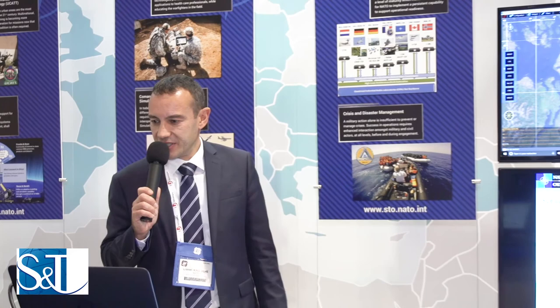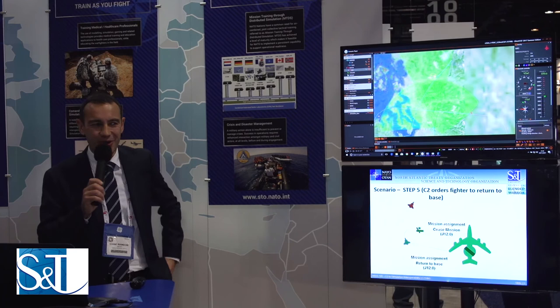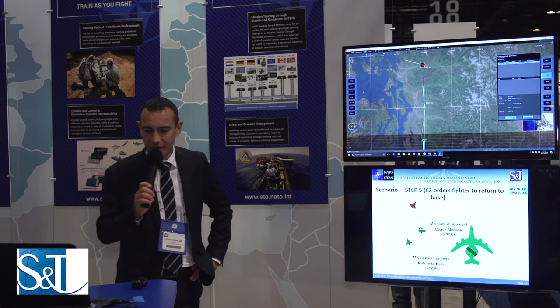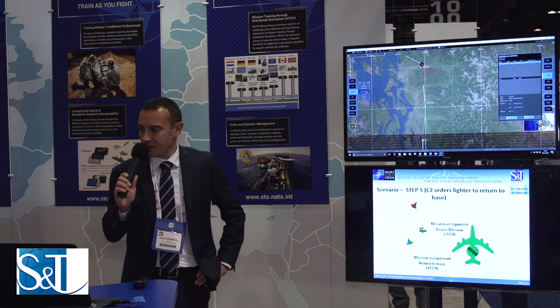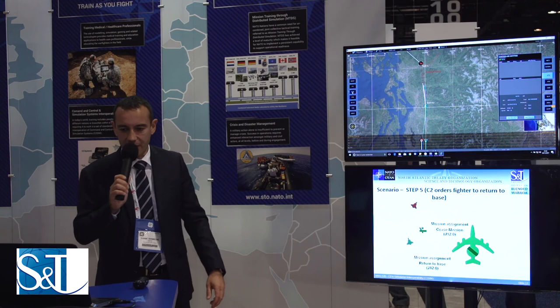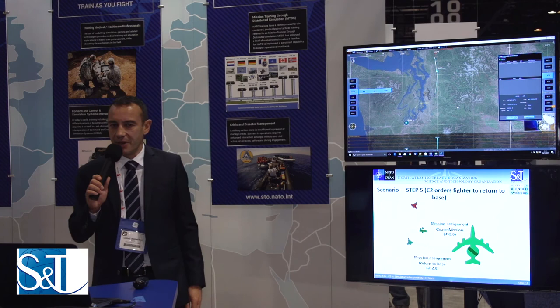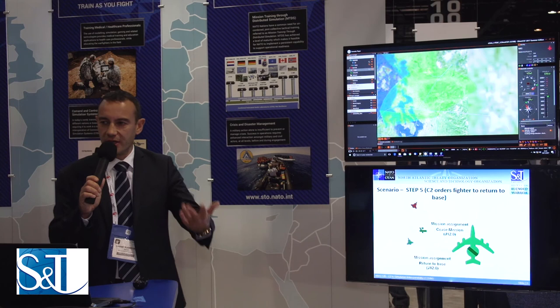Next step: switch to DirectCGF to order the unit to fly back north to withdraw. Then switch back to Starlink and assign a new order for the Rafale to cease the mission — and then another order to return to base, RTEB. Moving back to DirectCGF, the Rafale will once again change its route. This concludes the demonstration part of the presentation.